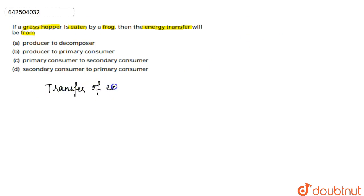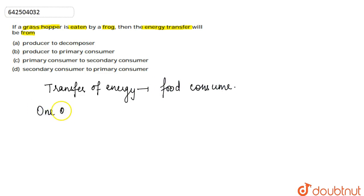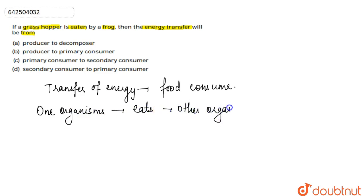The transfer of energy basically occurs because of the food consumed. When one organism eats another organism, the organism that has eaten the other one will get the energy.